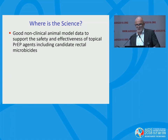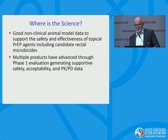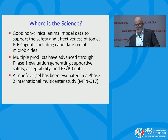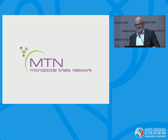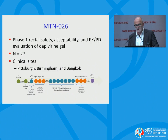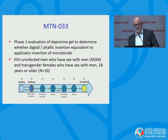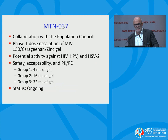Where's the science? We have animal model data and have done a lot of phase one evaluation of different products. We went as far as an international phase two multicenter study of tenofovir gel, but as yet no definitive licensure studies — no phase two/three studies. The Microbicide Trials Network has been the leader in this field. We're currently looking at dapivirine gel in a phase one study in the U.S. and Bangkok, and also asking whether you could insert enough gel digitally or on a phallic device to protect the mucosa from a PK/PD perspective. The MTN is also launching a study with the Population Council's carrageenan MIV-150 product — a dose escalation study, which I think is very important.